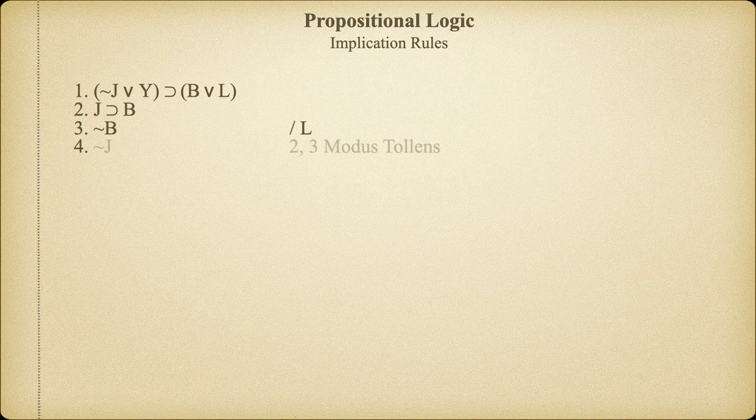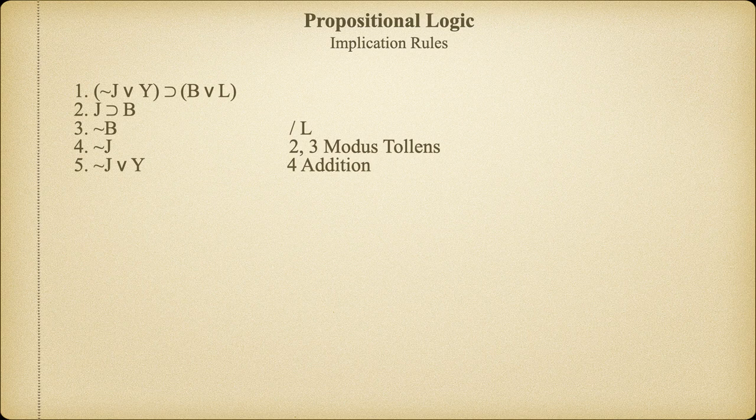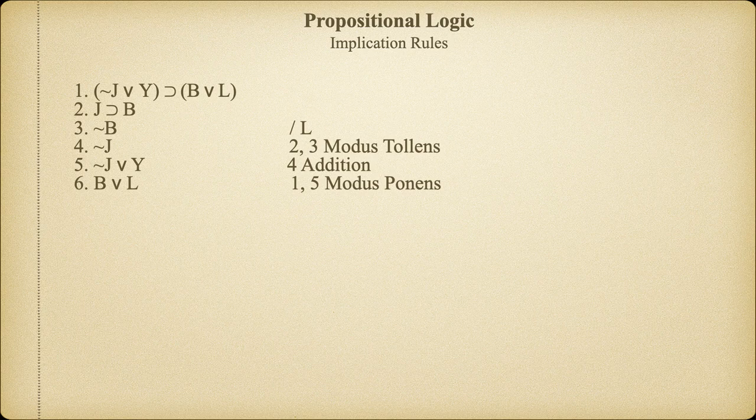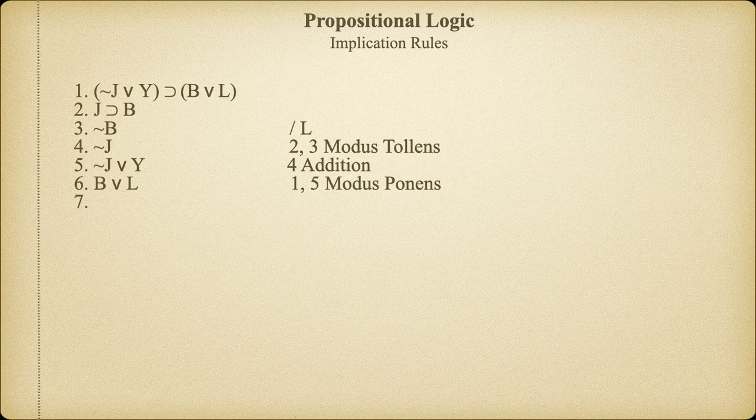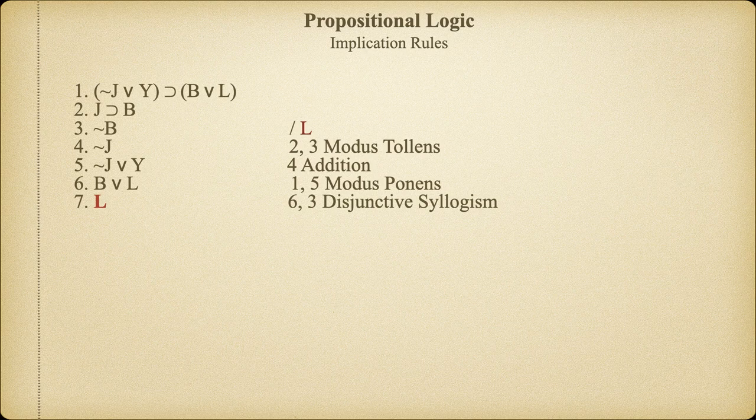So our first step is going to be to derive not J using the modus tollens rule on lines two and three. Next, we can use the addition rule to create the disjunction, it's not the case that J or Y. Now we're ready to derive B or L from the first premise using modus ponens. Having validly derived B or L on line six, we can now derive L by itself, performing a disjunctive syllogism on lines six and three.